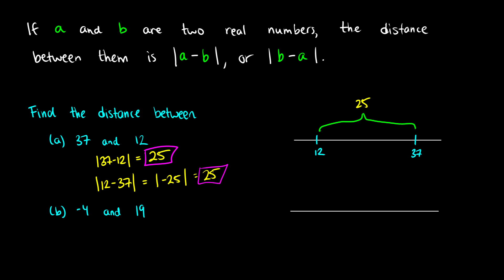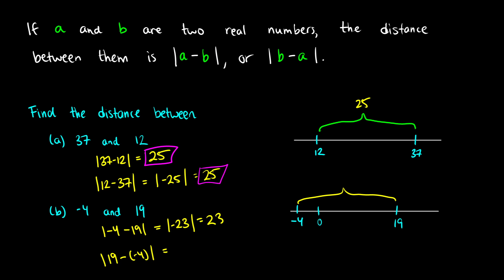Let's do another one with negative 4 and 19 — here we have different signs. So there's negative 4 and there's 19, with 0 in between. We can do the absolute value of negative 4 minus 19, which gives the absolute value of negative 23 — a distance of 23. Or we can do the absolute value of 19 minus negative 4, which gives 19 plus 4, the absolute value of 23, also outputting 23. Regardless of which one we subtract first, we get the same distance, because there are no negatives or positives in distance — it's just about how far you've traveled.